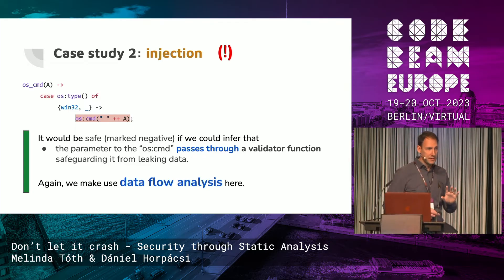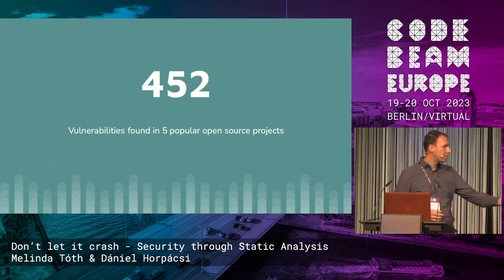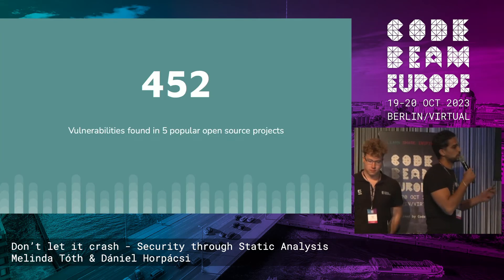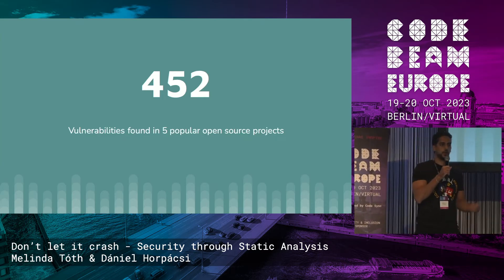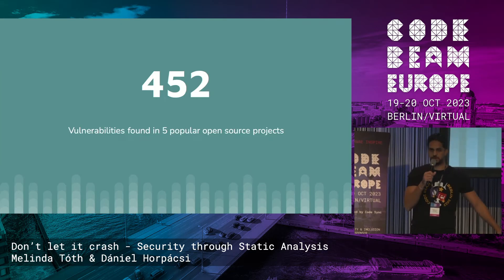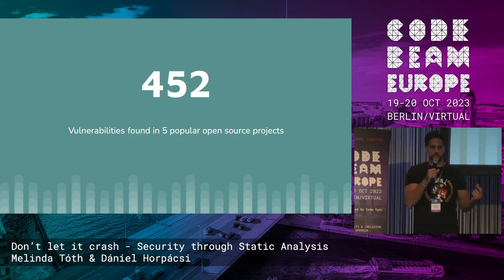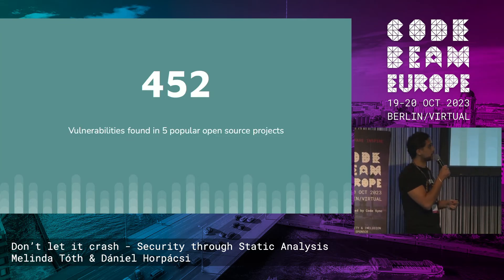We have made a lot of experiments, and I have two colleagues from Erlang Solutions here who are going to share more findings. This number is what we generated after running the analysis on five open source projects that are widely used and very popular — projects everybody here probably uses. Other applications are also built on top of them. The issue is that these problems might even leak above. We wanted to make sure everybody knows about these vulnerabilities and the number of them.